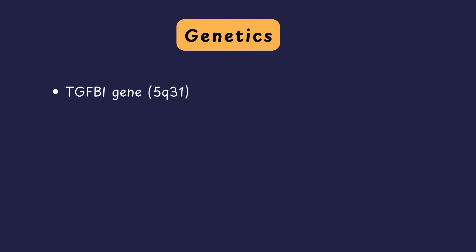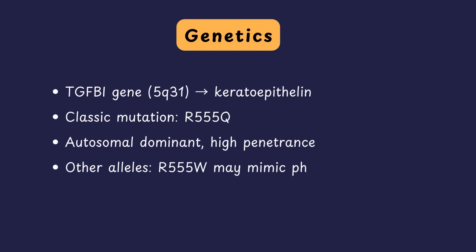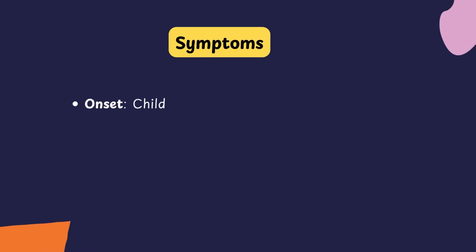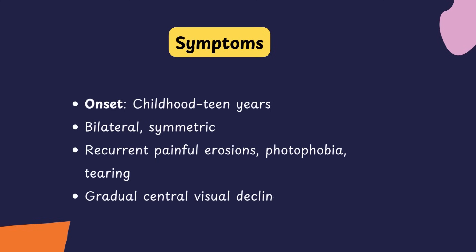The second Bowman's layer dystrophy is Thiel-Benke corneal dystrophy, or TBCD. This dystrophy is also caused by mutations in the TGF-β1 gene on chromosome 5, which encodes keratoepithelin. The classic mutation is R555Q, though rarer variants like R555W can produce a similar phenotype. Like RBCD, TBCD follows an autosomal dominant inheritance pattern. Patients usually present in childhood or teenage years with bilaterally symmetrical, recurrent, painful erosions with tearing and photophobia.